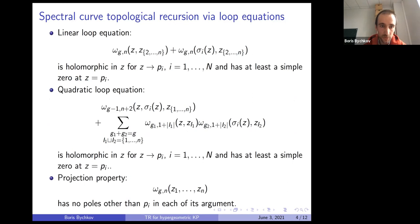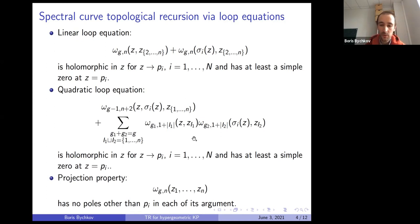The three properties are: the linear equation, the quadratic equation, and the projection property. The linear equation means that the expression involving omega_{g,n} is holomorphic in z, where sigma_i(z) is the deck transformation near the simple critical points p1, etc. The quadratic loop equation reads that this expression is holomorphic in z near the zeros of dx. The projection property reads that omega_{g,n} has no poles other than at the p_i's in each of its arguments.